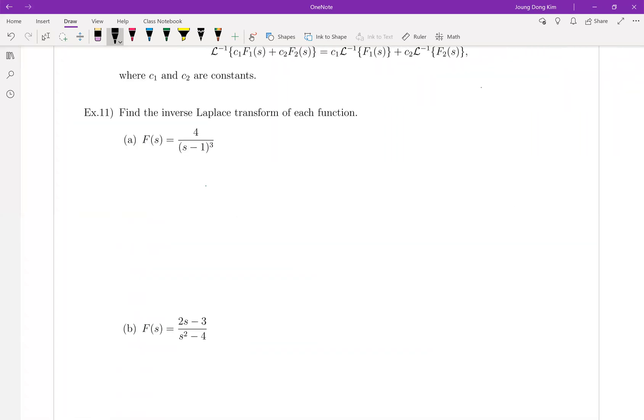So this one, since we know from table number 11, Laplace transform of t to the n times e to the at is equal to n factorial over s minus a to the n plus 1. Just compare. Then if your n is 2, then this form must be 2 factorial which is 2, then s minus a cubed. And for this case, n is 2 and a is 1.